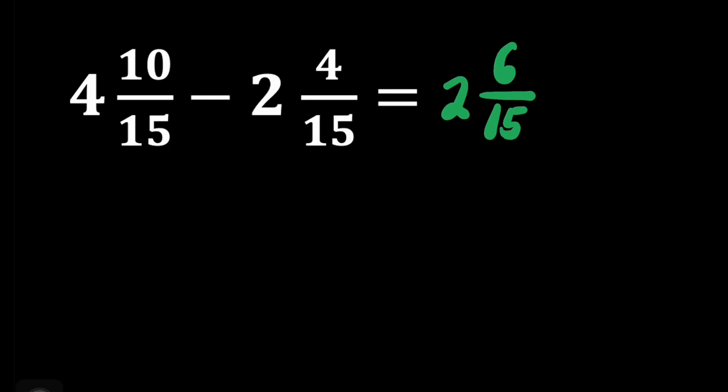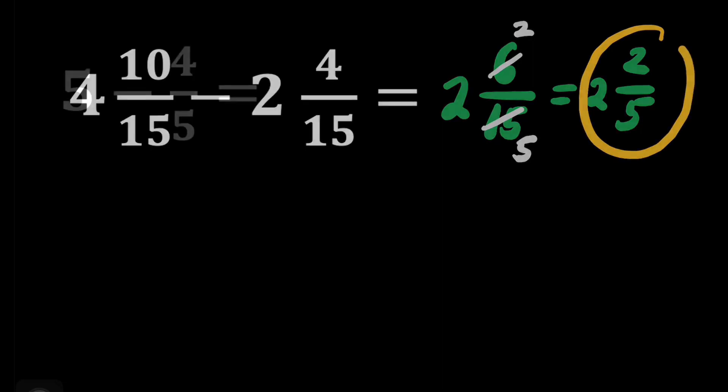If this mixed number is already in lowest term, then that is our answer. But this time, we can still reduce 6 fifteens to lowest term. What number can we divide both 6 and 15? We can divide it by 3. So we can just do 6 divided by 3, that's 2, and then 15 divided by 3, that's 5. So our answer for this question is 2 and 2 fifths.